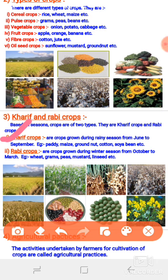Crops can also be divided on the basis of season. These crops are known as Kharif crops. Examples include paddy, maize, nuts, and cotton. These are all Kharif crops because they can be grown only during the rainy season, as these crops require large quantities of water.